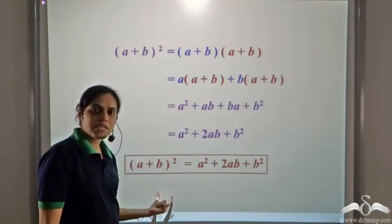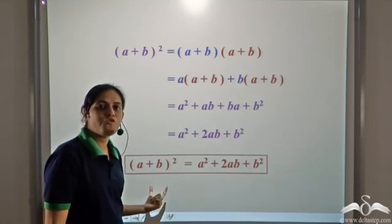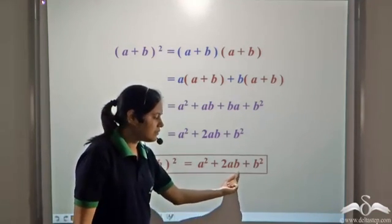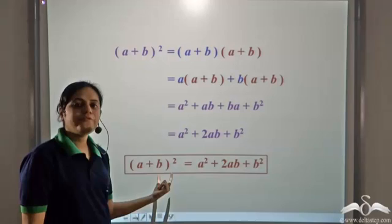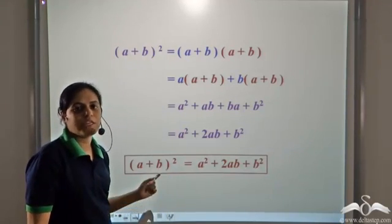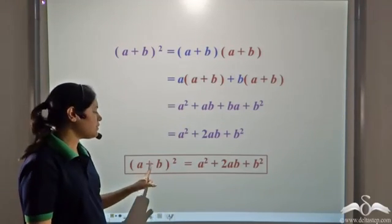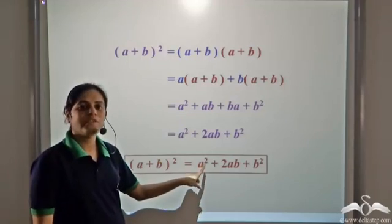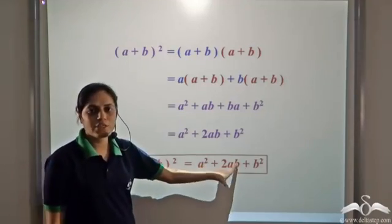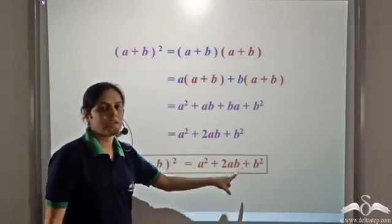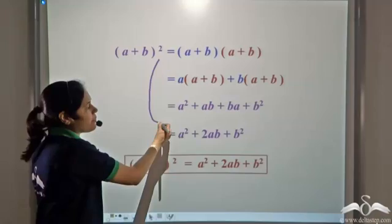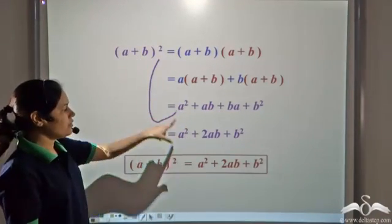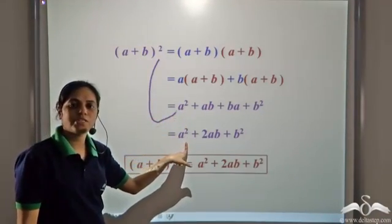So a plus b whole square is equal to a square plus 2ab plus b square is a special identity. It is an identity because it holds true for all values of a and b. So now, if you see any expression in the form of a plus b whole square, you can straight away substitute it with a square plus 2ab plus b square — jumping these intermediate steps and coming straight to the result.